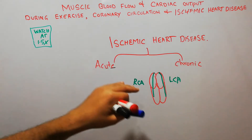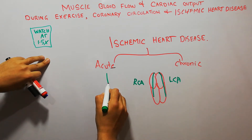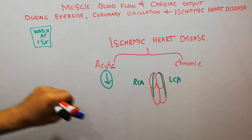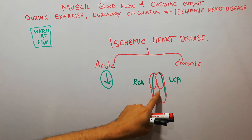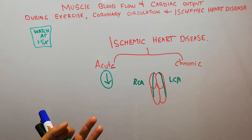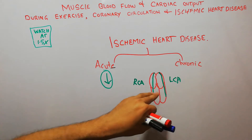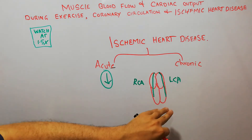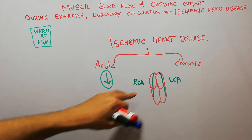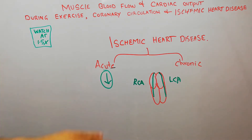Any condition which decreases the blood supply to the heart muscles leads to ischemia and causes ischemic heart disease. The heart muscles are alive, they are pumping, and they are keeping the other tissues of the human body alive, so they need proper blood flow supplied through the coronary arteries.